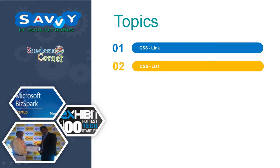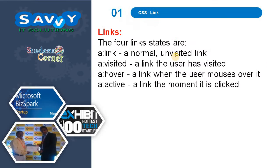In this section we are learning about links as well as lists. The four link states are: a:link — a normal unvisited link; a:visited — a link the user has visited; a:hover — a link when the user moves over it; and a:active — a link the moment it is clicked.